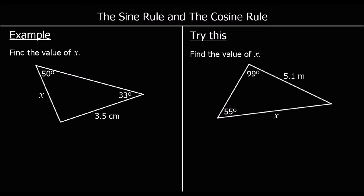So let's take a look at these first questions. We've got find the value of x, so we're finding a length, and we've got a triangle. We need to know: is it the sine rule or the cosine rule we're using? We haven't got a right angle, so we know it's not going to be Pythagoras or SOHCAHTOA. If we're using the sine rule, we have opposites. So do we have opposites here? We've got x opposite 33 degrees, and 3.5 opposite 50. So we do have opposites, so we're going to use the sine rule. And we're finding a length, so we have the lengths on top.